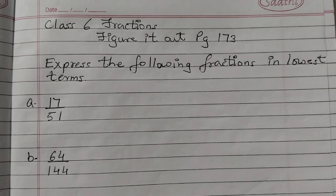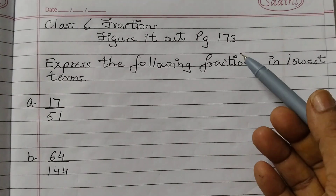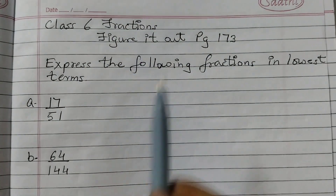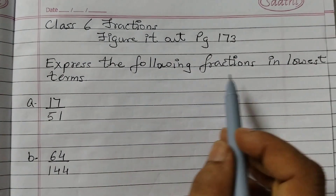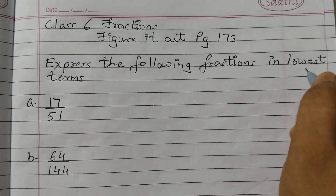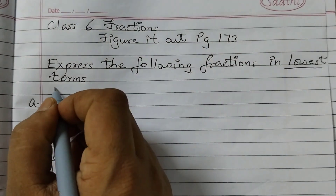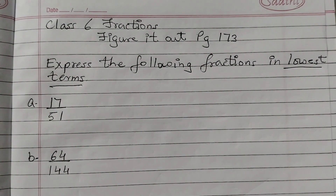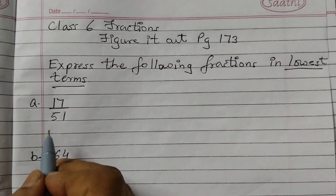Hello students, welcome back to Rosymath's class. Today we shall solve the questions given in 'Figure It Out' on page 173, from the chapter on fractions. We will express the following fractions in lowest terms. Lowest term means that the numerator and denominator will have only 1 as a common factor.